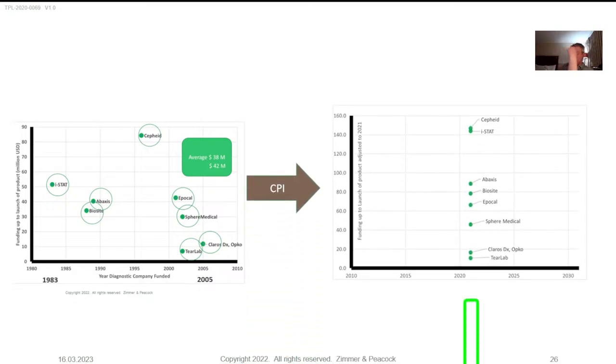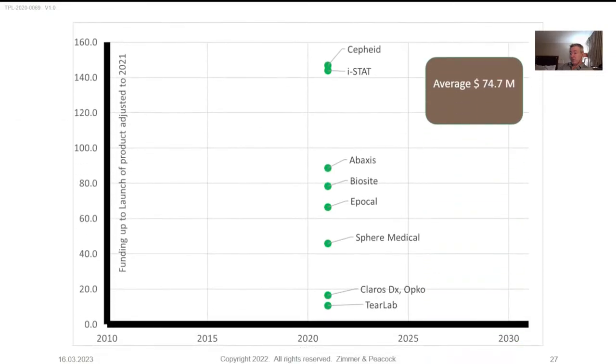Now if I adjust these prices and put them into 2021 prices, you'll find out that the cost to get to regulatory approval was 74.7 million US dollars. So it's really important when talking to people about the cost of materials to understand the cost of this entire program, what it's going to really cost. When people come to me and say we've got funding of X millions, that's a really important parameter because it tells me they've truly understood the cost of development.